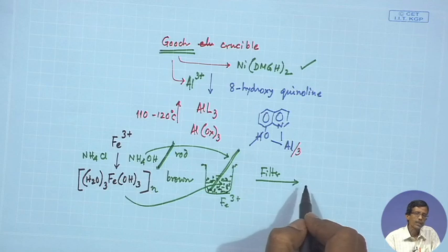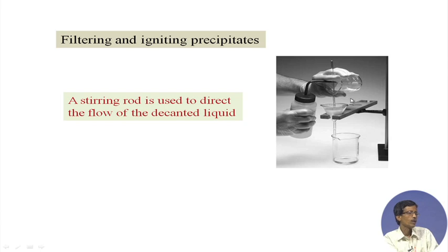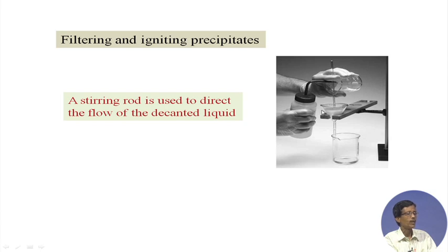Initially the whole bulk is transferred over the funnel fitted with the filter paper — we will also see how to fold the filter paper. The glass rod used for transferring the reagent is also used here. At the end, when most of the bulk of the ferric hydroxide solid has been transferred, you have to wash and clean the beaker to quantitatively transfer the entire precipitate onto the filter paper.